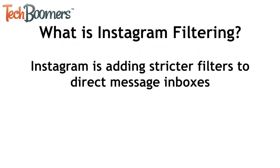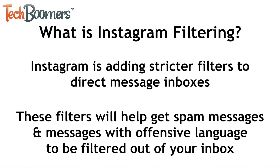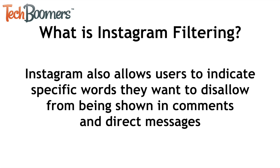Instagram is adding stricter filters for our direct message inboxes on their platform. These filters will help get spam messages or messages with offensive language to be filtered out of your main inbox and into your hidden requests instead. Instagram also allows users to indicate specific words they want to disallow from being shown in comments on their content, and now these hidden words will also apply to direct messages.